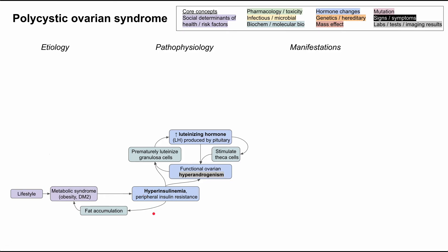It wouldn't be true to say that everybody who has PCOS has metabolic syndrome, obesity, or type 2 diabetes. Ten to 20% of people with PCOS do not have type 2 diabetes and do not have this high insulin state. There are some unknown intrinsic ovarian factors that can predispose you to premature luteinization of the granulosa cells, and we don't know exactly what causes that. There does seem to be some genetic predisposition, and there are hereditary correlations.